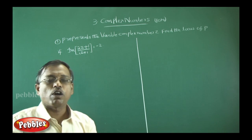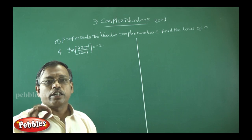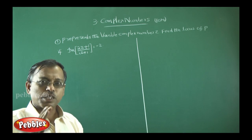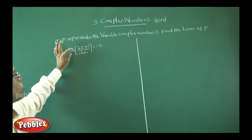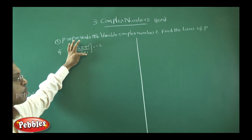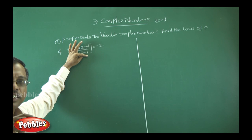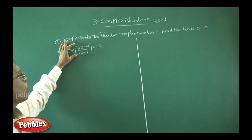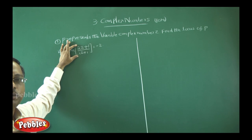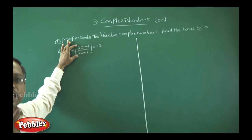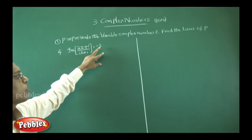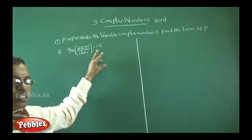In locus problems, what you have to do is: replace z as x + iy in the given equation first. So in (2z + 1) / (iz + 1), substitute z as x + iy, then arrange the numerator and denominator in complex number form. Take the imaginary part, then equate it to minus 2. This is the procedure.